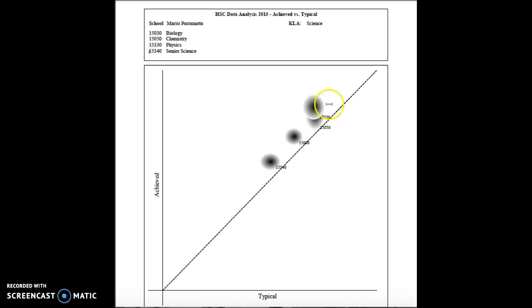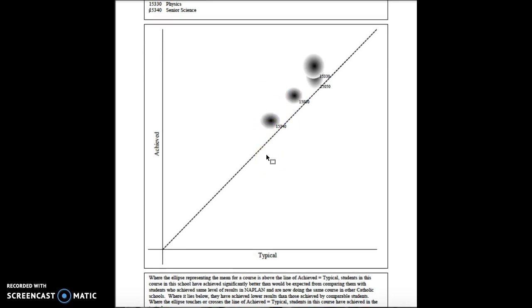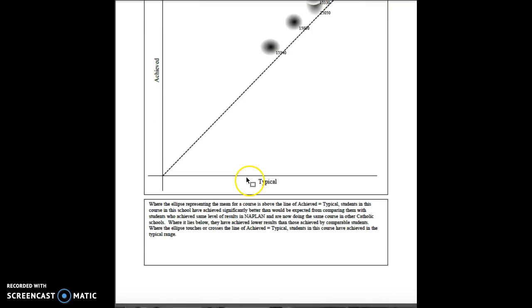You can see in the sciences, all of the students in the cohort achieved above typical. The ellipse is where the mean is - they don't know the exact mean of the students, and the ellipse indicates that it's somewhere around that area.